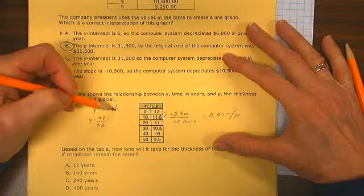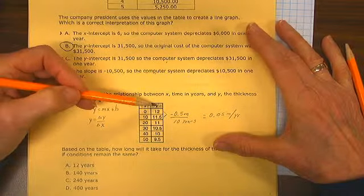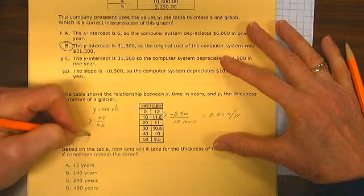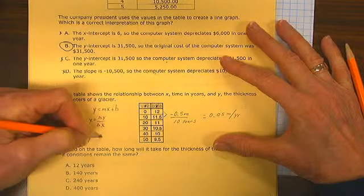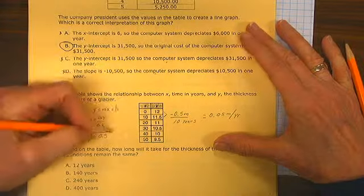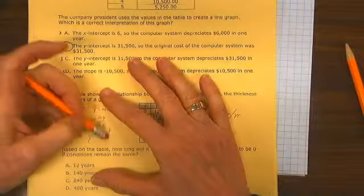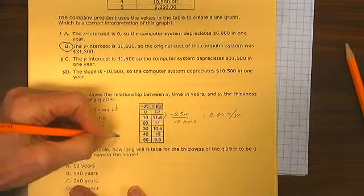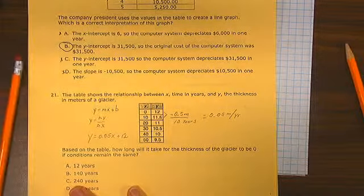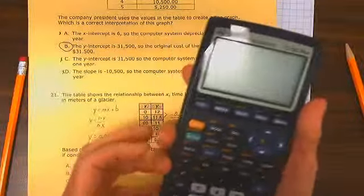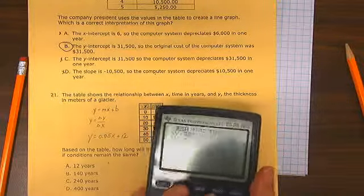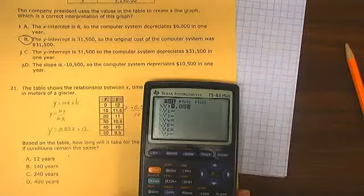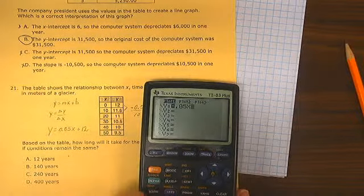That is exactly the same as 0.05 meters per year. And our y-intercept is the value of y when x is 0. Our equation, then, is y equals 0.05x plus 12. We put that into the calculator, y equals 0.05 times x plus 12.